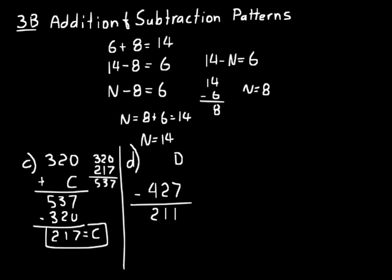Look at practice problem D: D minus 427 equals 211. In subtraction, we always have a bigger number minus a smaller number equals the difference. So D has to be bigger than 427, which means we're going to do an addition problem. Just remember you're always doing bigger minus smaller — that helps you think: to find that missing first number, I need to add the two numbers given. There are three parts; you combine the two known parts to find the missing one.